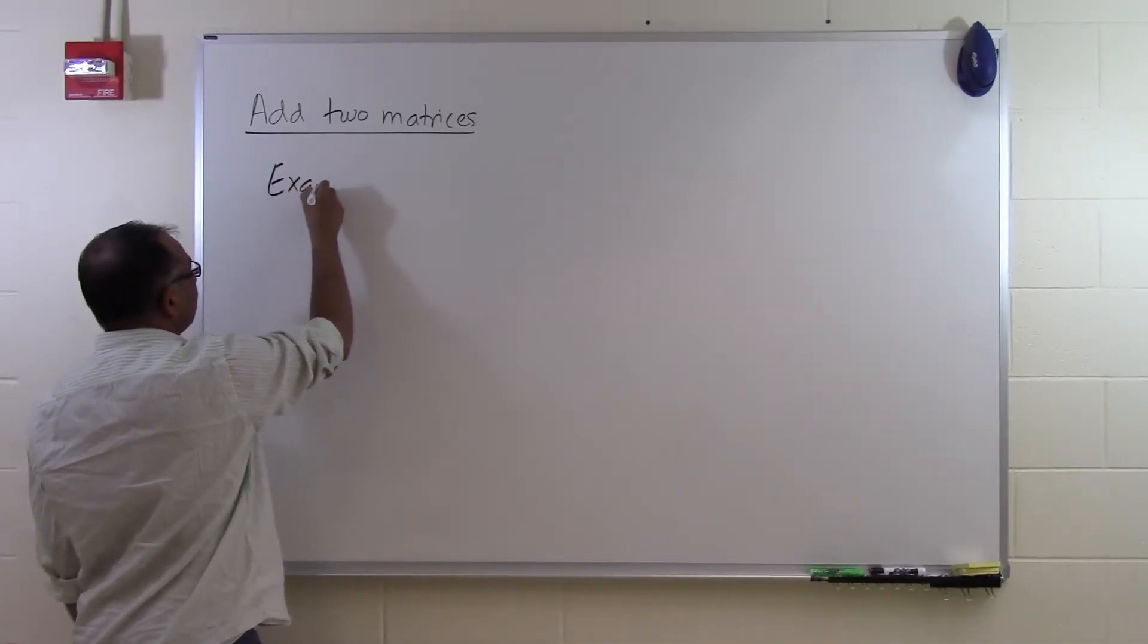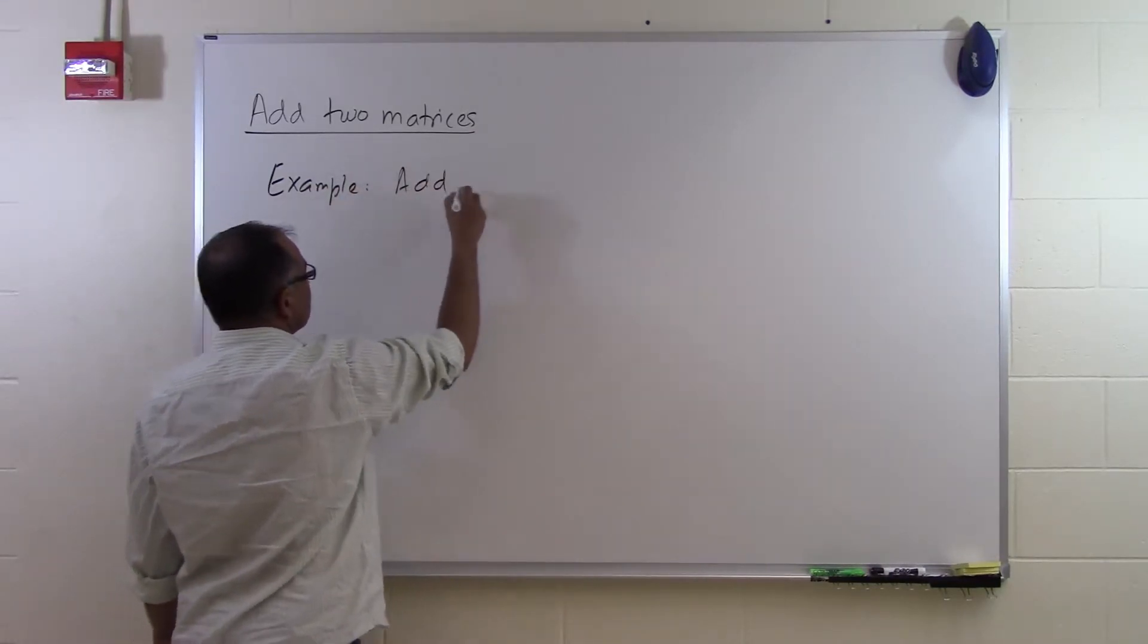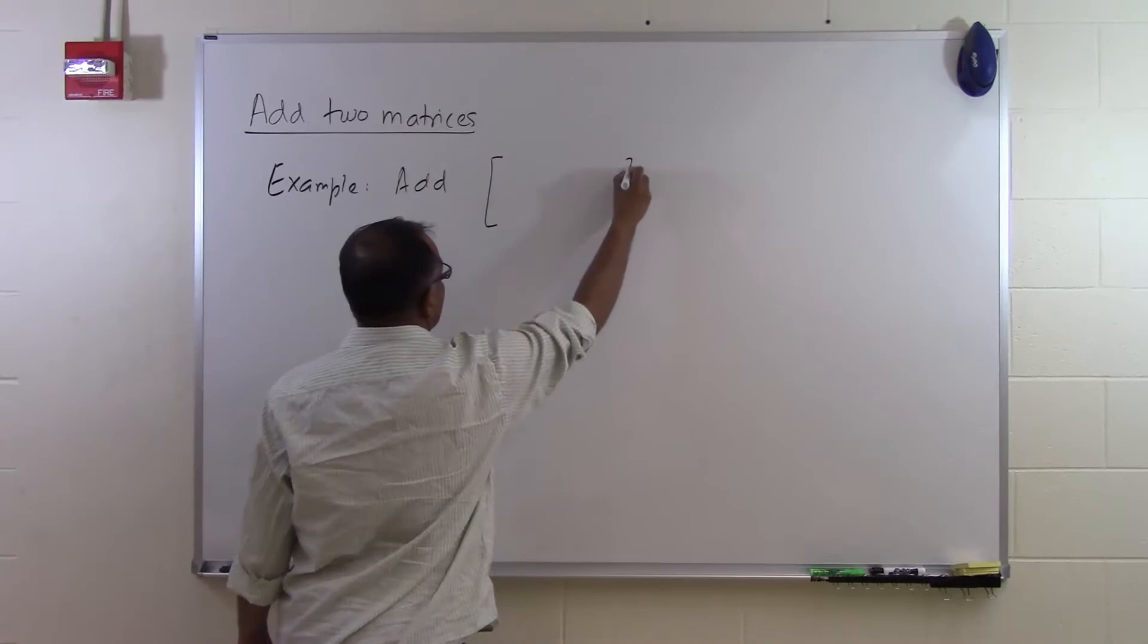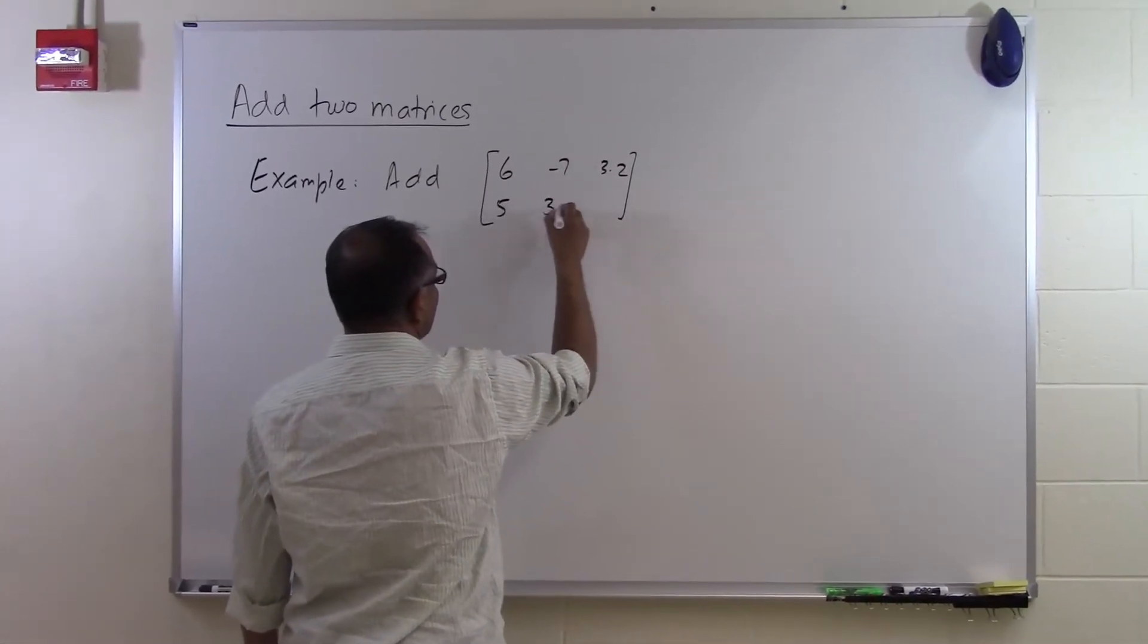Let's look at an example. Add these two matrices: 6, -7, 3.2, 5, 3, 8.